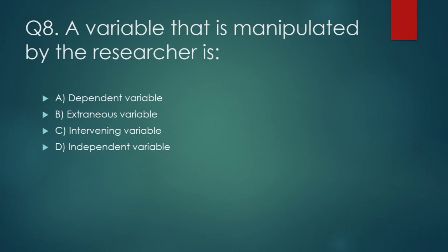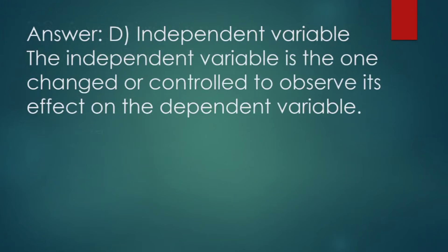A variable that is manipulated by the researcher is: (A) dependent variable, (B) extraneous variable, (C) intervening variable, (D) independent variable. Correct answer: option D — independent variable. The independent variable is the one changed or controlled to observe its effect on the dependent variable.